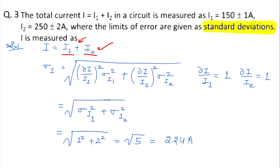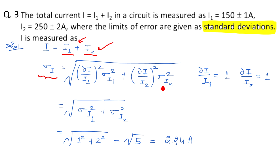When we get the total standard deviation with two terms, and we find the standard deviation in i, the formula is: sigma_i = under root of [(∂i/∂i1)² × σi1²] + [(∂i/∂i2)² × σi2²]. Now what we need to do is find the values of ∂i/∂i1 and ∂i/∂i2.